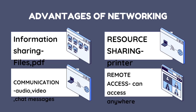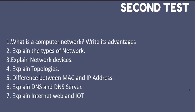For advantages of a network, there are four points: information sharing, resource sharing, communication, and remote access. For information sharing, mention that files and PDFs are shared through the network. Communication means audio, video, chat, and messages through the network. Resource sharing means a printer can be shared through the network. Remote access means you can access the system anywhere at any time. The same answer works for both two-marker and three-marker questions.